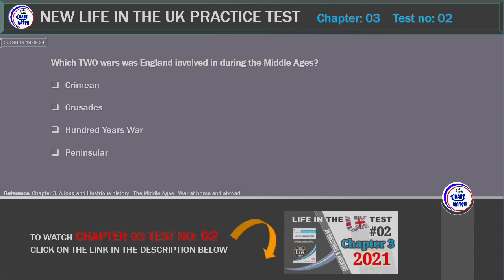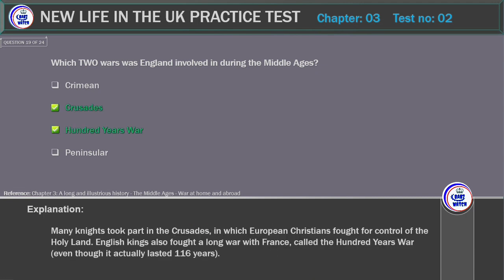Which two wars was England involved in during the Middle Ages? Options: Crimean, Crusades, Hundred Years' War, Peninsula. Correct answer: Crusades and Hundred Years' War. Explanation: Many knights took part in the Crusades, in which European Christians fought for control of the Holy Land. English kings also fought a long war with France called the Hundred Years' War, even though it actually lasted 116 years.